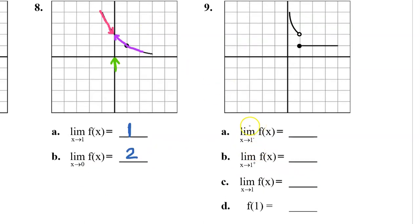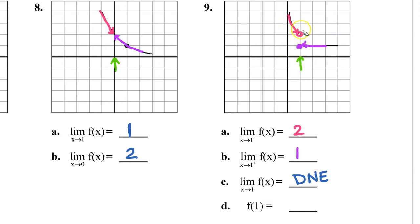Problem number 9. For part A we want the limit as x approaches 1 from the left. Here is an x value of 1. As we approach 1 from the left we are approaching a y value of 2 — that is the left-sided limit. How about the limit as x approaches 1 from the right? As we approach 1 from the right we approach a y value of 1. Because the limit from the left and the limit from the right are two different numbers, the overall limit as x approaches 1 does not exist. And f at 1 — the value of the function at 1 — is given by the closed circle, so f(1) equals 1.